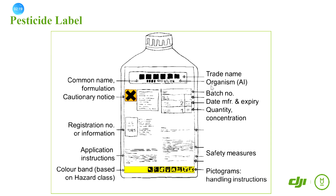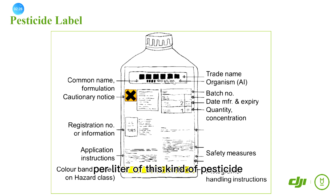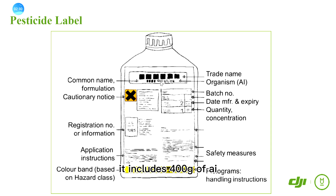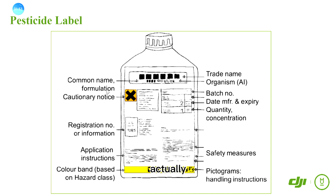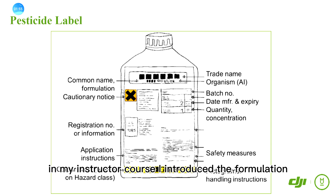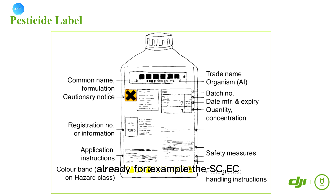The active ingredient is the real substance used to kill or control the pest. For example, here it shows that per liter of this kind of pesticide, it includes 400 grams of AI. Secondly, here is the formulation. In my instructor course, I introduced formulations already — for example, SC, EC — all of them are formulation types.